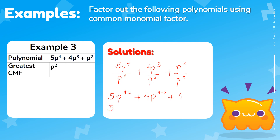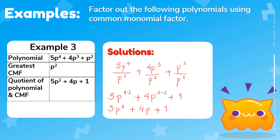Continuing: 5p² + 4p + 1. We don't write 1 as an exponent. So the quotient is 5p² + 4p + 1, and expressed in factor form, the final answer is p²(5p² + 4p + 1). Very easy, right?